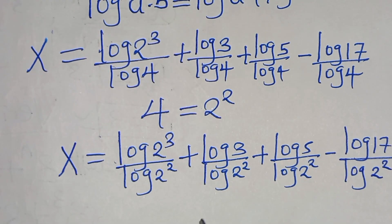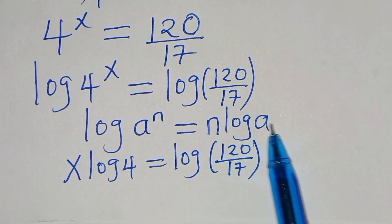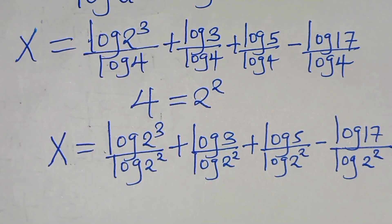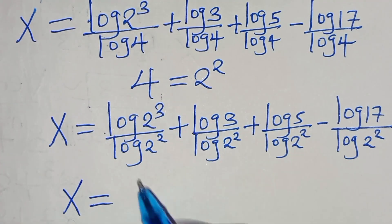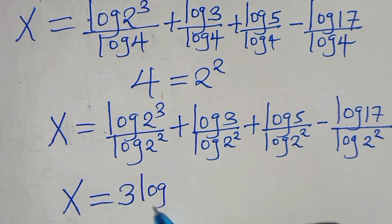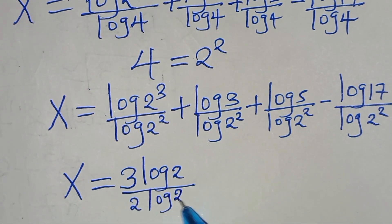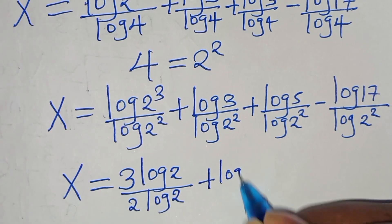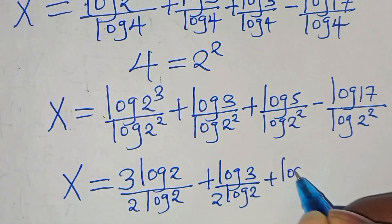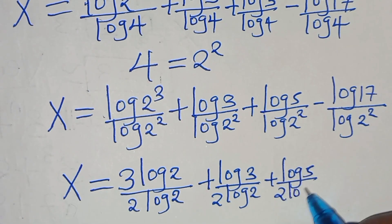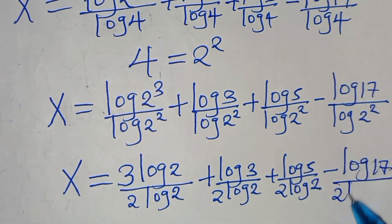Now we apply the power property: log(a^n) equals n·log(a). So log(2³) becomes 3·log 2, and log(2²) becomes 2·log 2. Therefore x equals 3·log 2 over 2·log 2, plus log 3 over 2·log 2, plus log 5 over 2·log 2, subtract log 17 over 2·log 2.